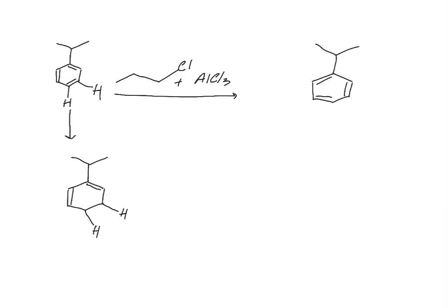One of the limitations of Friedel-Crafts alkylation reactions is that the carbocations that are active electrophiles during the reaction are prone to their normal rearrangements, such as rearrangements via 1,2 hydride or 1,2 alkyl shift. Let's take a look at alkylation of isopropyl benzene with 1-chloropropane.